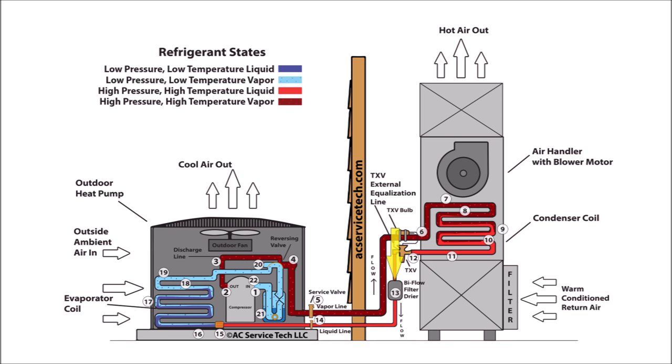At step thirteen, the subcooled liquid goes through the bi-flow filter dryer where the dryer traps any debris and any water. The filter dryer has a fixed capacity due to its size. After the refrigerant flows through the filter dryer, it remains a subcooled liquid refrigerant. Step fourteen is where you have the high pressure, high temperature, subcooled liquid refrigerant flowing through the liquid line service valve. Over at step fifteen, you have the high pressure, high temperature, subcooled liquid refrigerant entering the metering device, and then you have a low pressure, low temperature liquid on the other side.